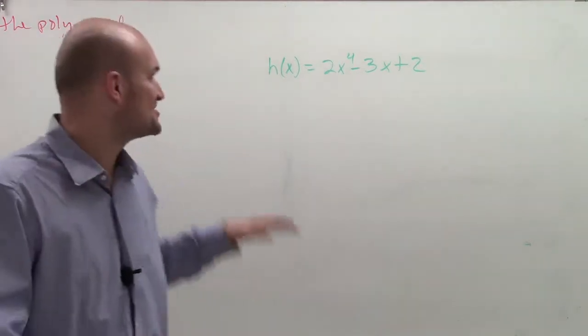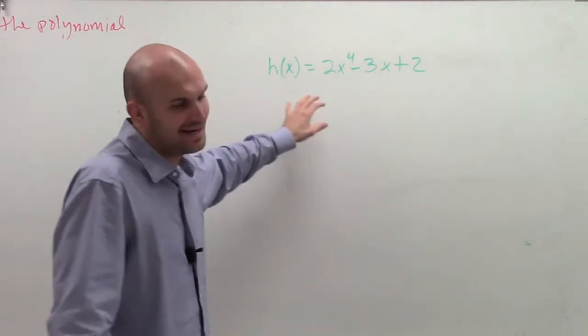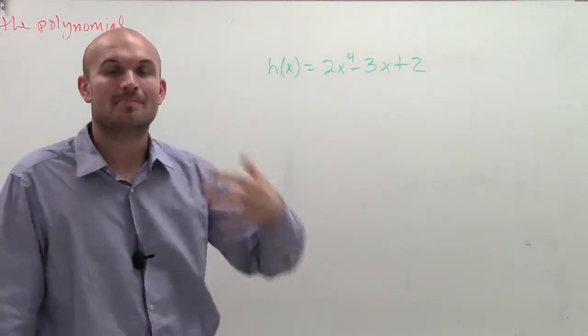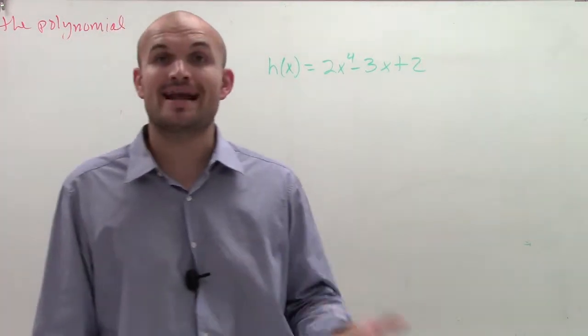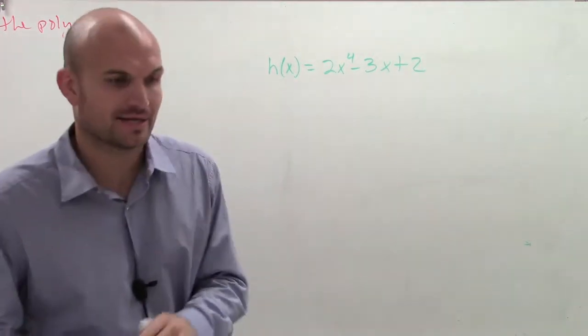Hello, welcome! What I want to do is show you how to find the possible positive real zeros or negative real zeros by using Descartes rule of signs.